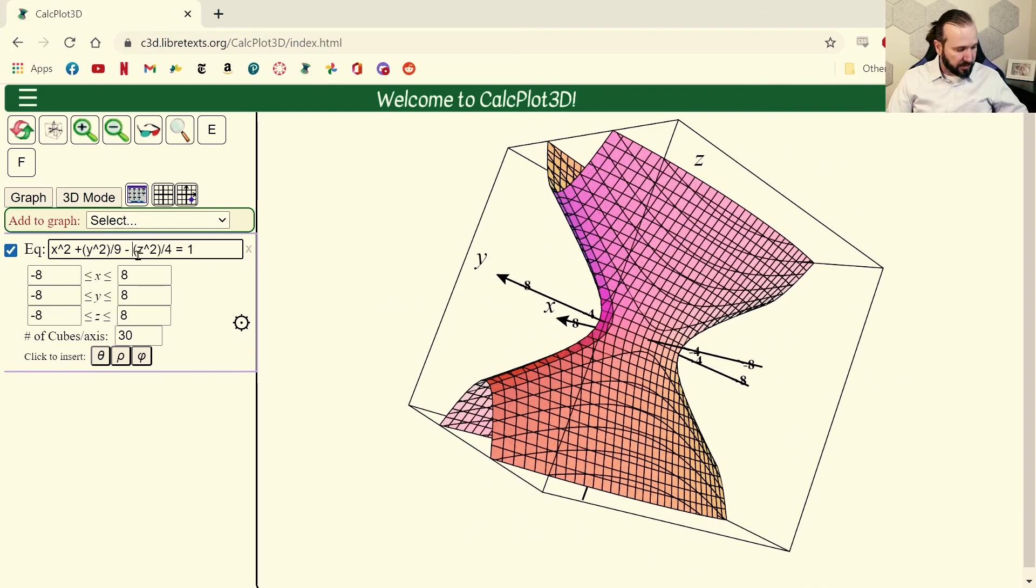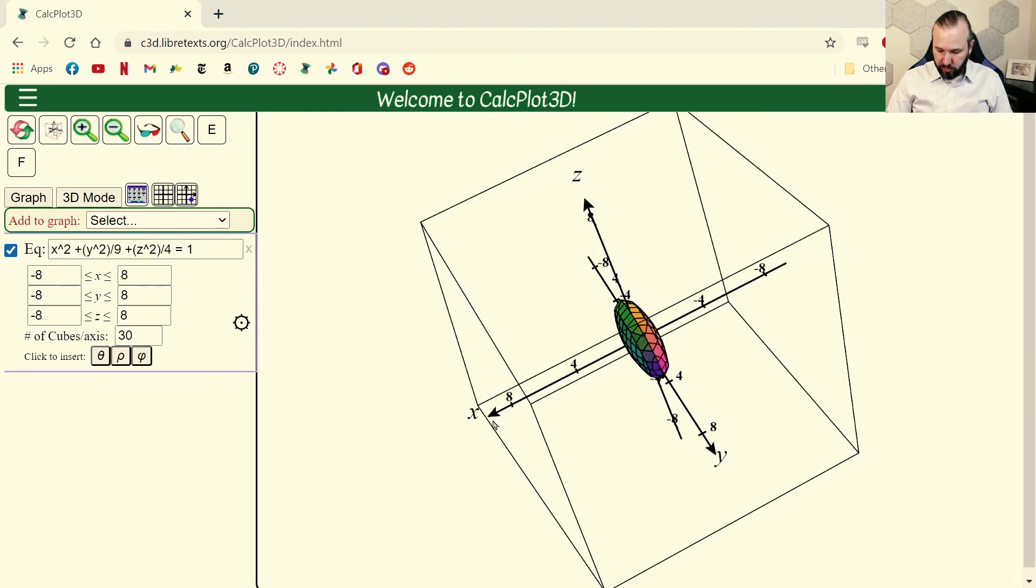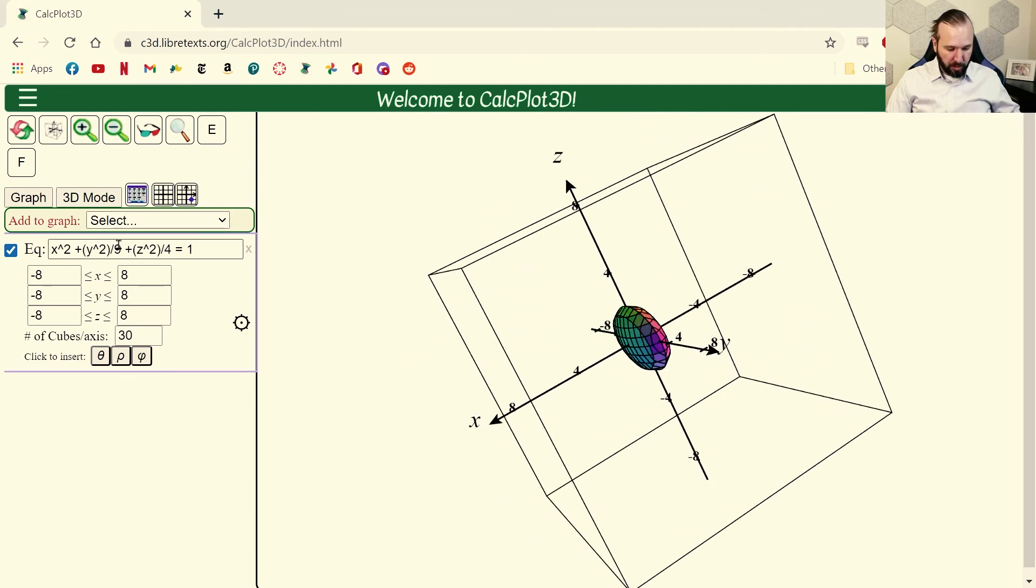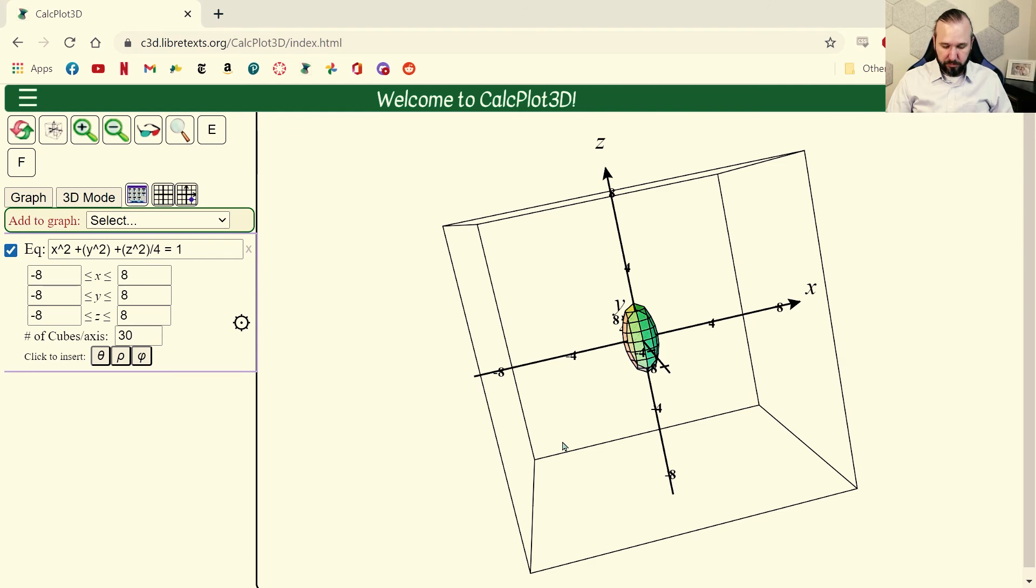And yeah, so you can go in and mess around with this and use it. You can see if I put a plus here, then it's going to graph this kind of ellipsoid here. And you can play around with this. You know, maybe if I get rid of that 9 right there, then now it'll make it kind of an ellipsoid in that direction.